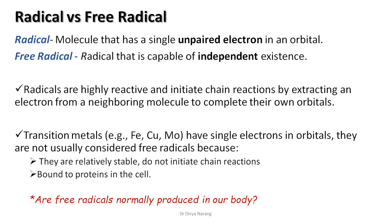Transition metals such as iron and copper exist in our body and have single electrons in orbitals, but they are usually not considered free radicals. This is because they are usually bound to proteins in cells, or if present in an enzyme, they are present in one oxidative state. They don't readily change their valency, are relatively stable in proteins, and do not initiate chain reactions.